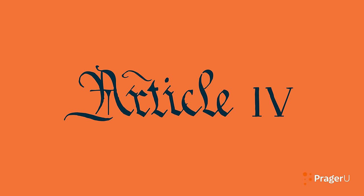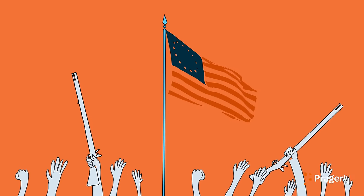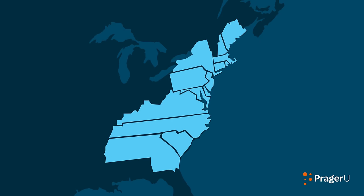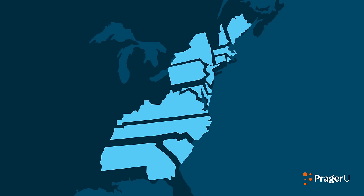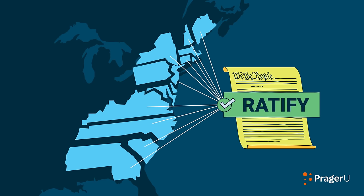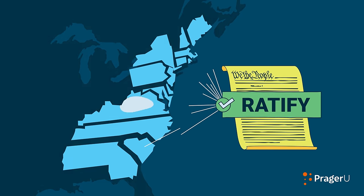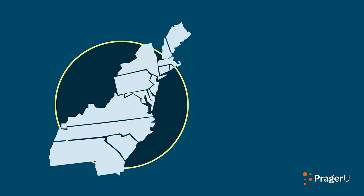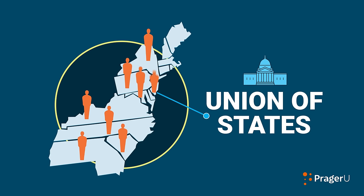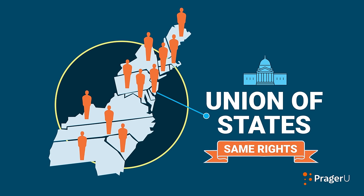Article 4. When America won the Revolutionary War, the former English colonies became free and independent states, almost as if they were separate countries. But when those states later voted to ratify the federal Constitution, they became part of an indestructible union of states under a common national government, one in which all citizens were granted the same rights.